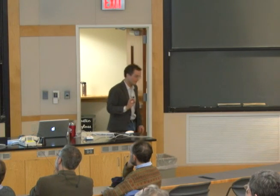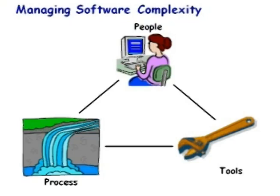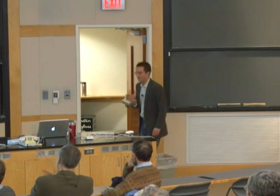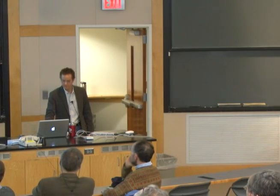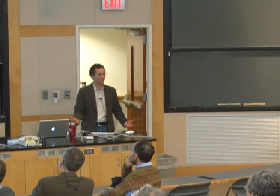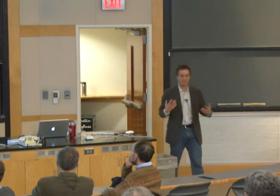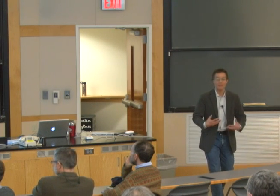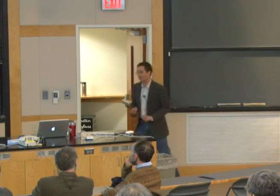How do we make software better than it currently is? I see it as a combination of three things: the people, the process, and the tools. Training good software engineers is critically important. Having people well-versed in how to write software reliably and not make common mistakes is essential for building large software. But it's not enough.